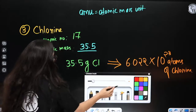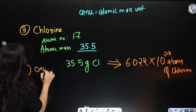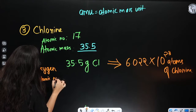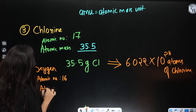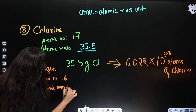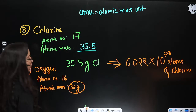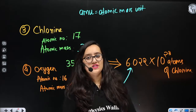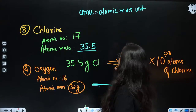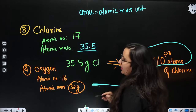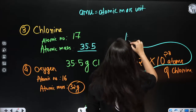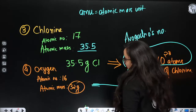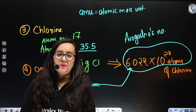Let us talk about oxygen. Its atomic number is 8 and its atomic mass is 16. If you take 16 grams of oxygen, you will find exactly Avogadro's number — 6.022 × 10²³ — atoms of oxygen in it. This is a magical number known as Avogadro's number. It was found out by a scientist named Avogadro, and that is why it is named after him.